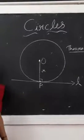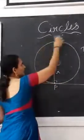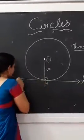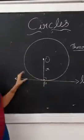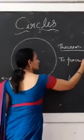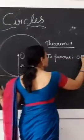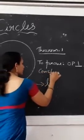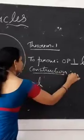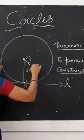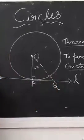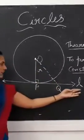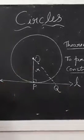Let us prove this theorem. Given: a circle with centre O, radius R, and tangent line L which touches the circle at point P. We need to prove that OP is perpendicular to L. For this, a construction is needed — we construct another line OQ which meets the tangent line L at point Q.